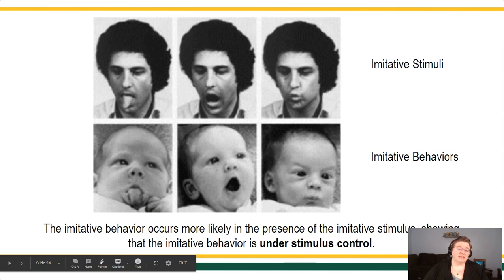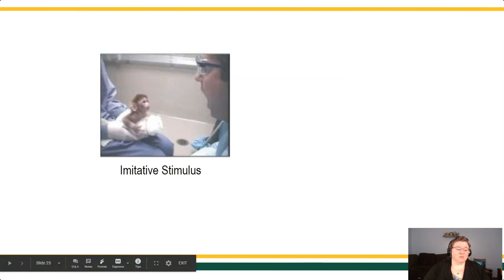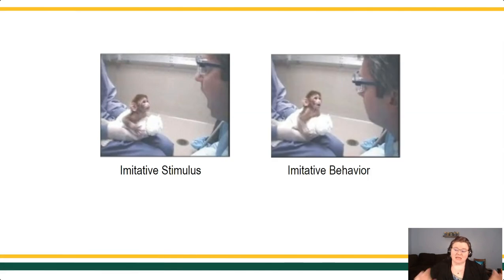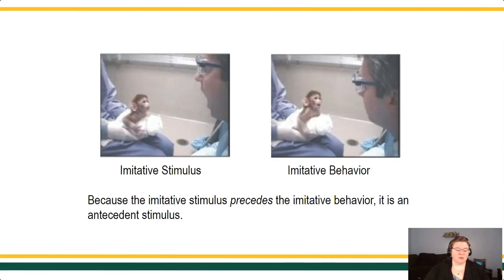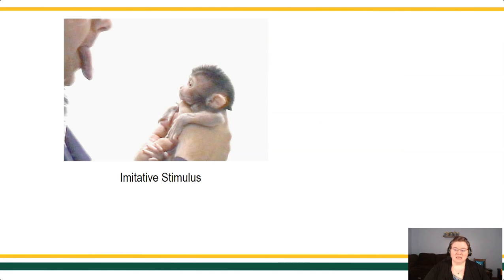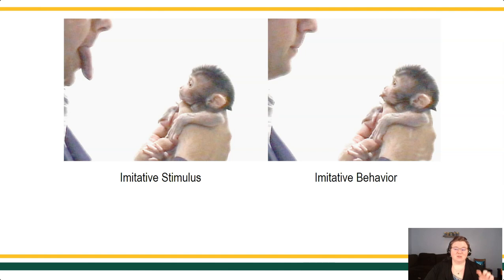We also see this across animals in the animal kingdom. So when we have these tiny, adorable monkeys who are presented with a facial expression — you see the researcher opening their mouth there — we see that the monkey will imitate. We do this as well for other responses, such as sticking out the tongue. We see the researcher on the left sticking out their tongue, and we see that animals in the animal kingdom can imitate our response. Remember, this is behavior under stimulus control — it's the antecedent stimulus that is setting the occasion for and controlling that behavior.